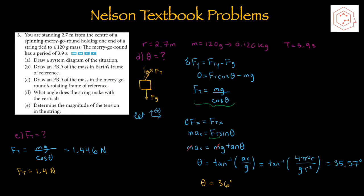Part E: determine the magnitude of the tension in the string. Using the formula derived earlier, ft = mg/cosθ, and plugging in the newly found theta value of 36°, the tension is 1.4 N.